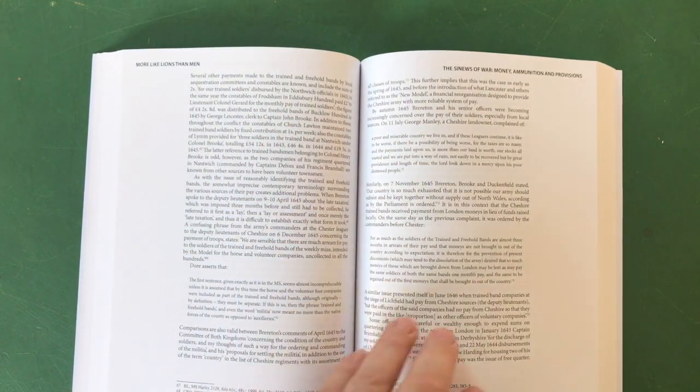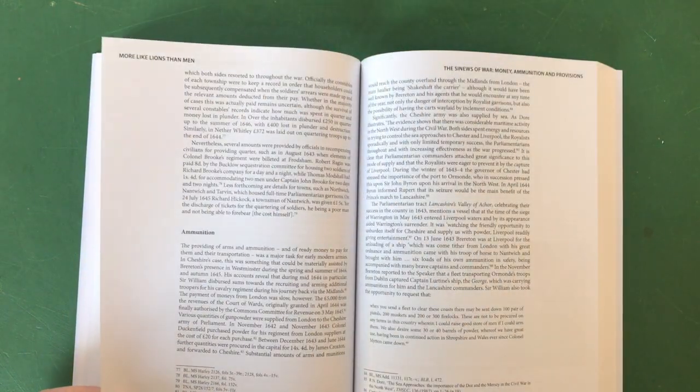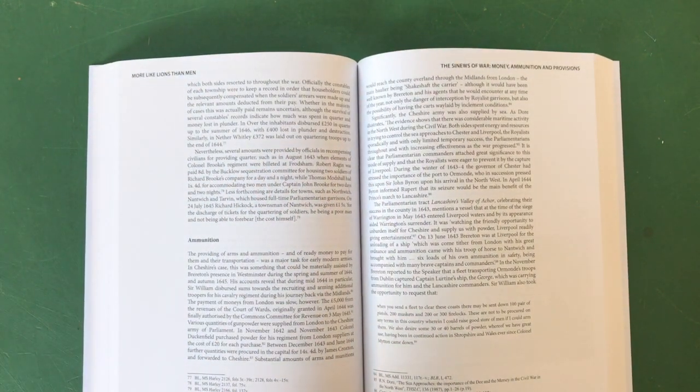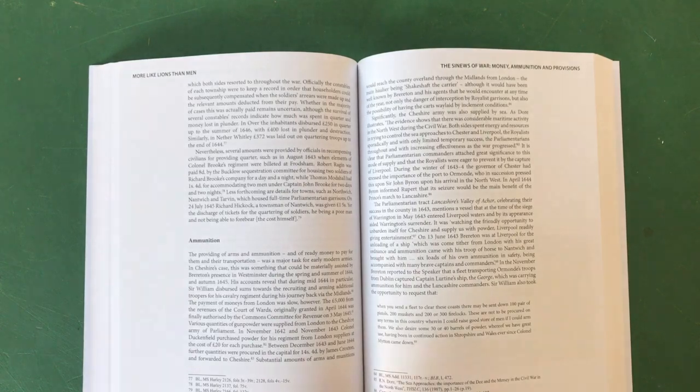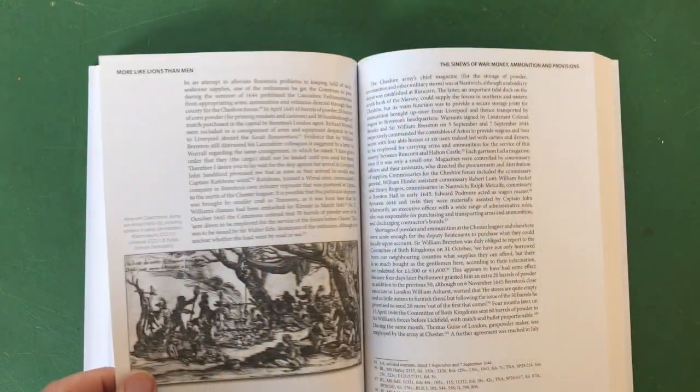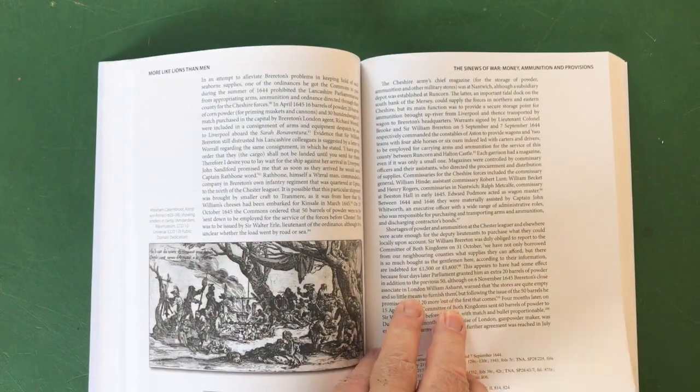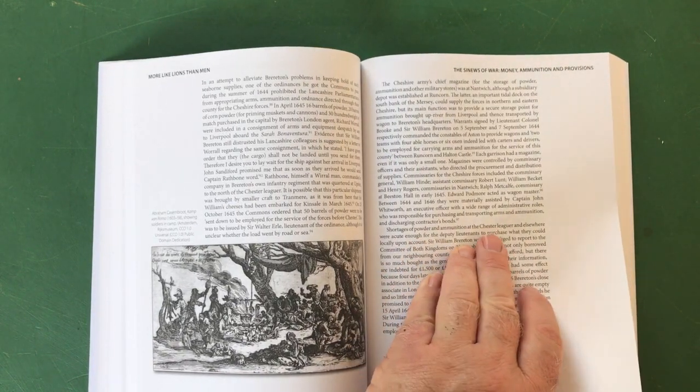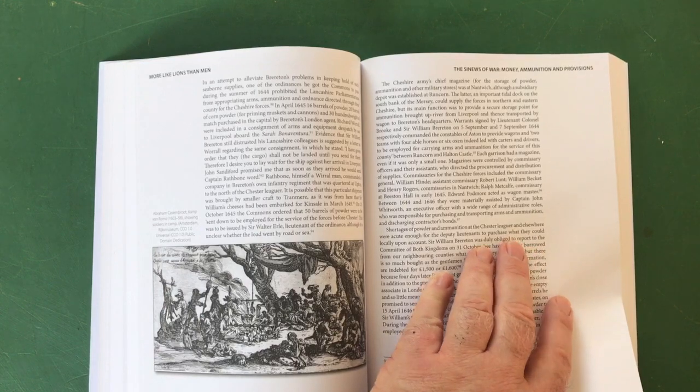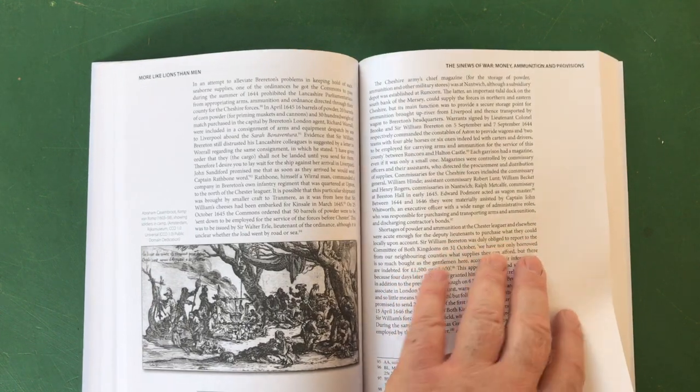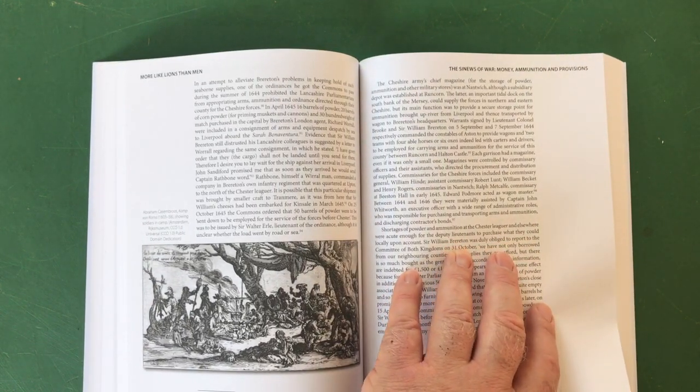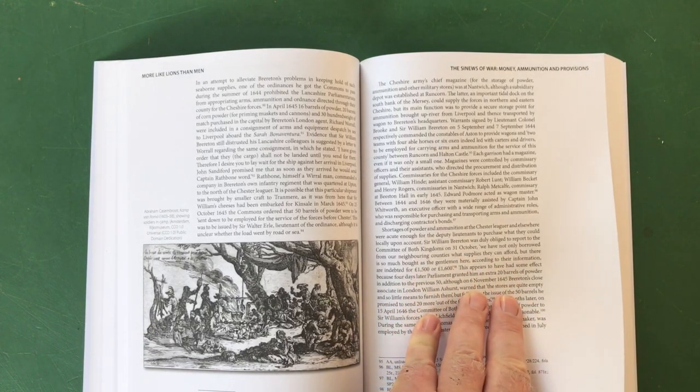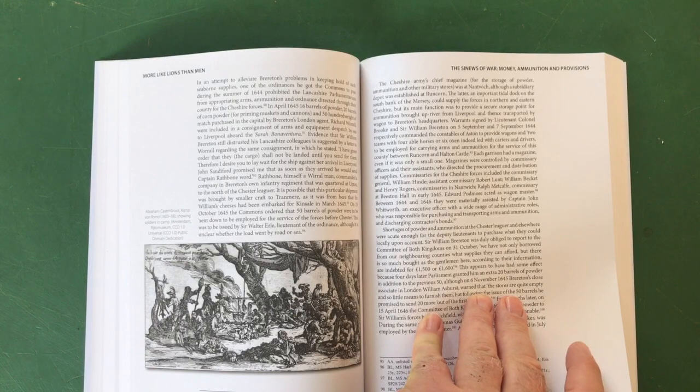Let's have a look, moving through. There's lots of money being talked about here, the kind of thing that I will just spend ages poring over. Ammunition - you can't go to war without ammunition. So again the procurement of ammunition, the expenses involved, the shortages. Here we go: shortages of powder and ammunition at the Chester Leaguer and elsewhere were acute enough for the deputy lieutenants to purchase what they could locally upon account. So parliament wasn't supplying them with enough ammunition so they had to go out and buy their own.